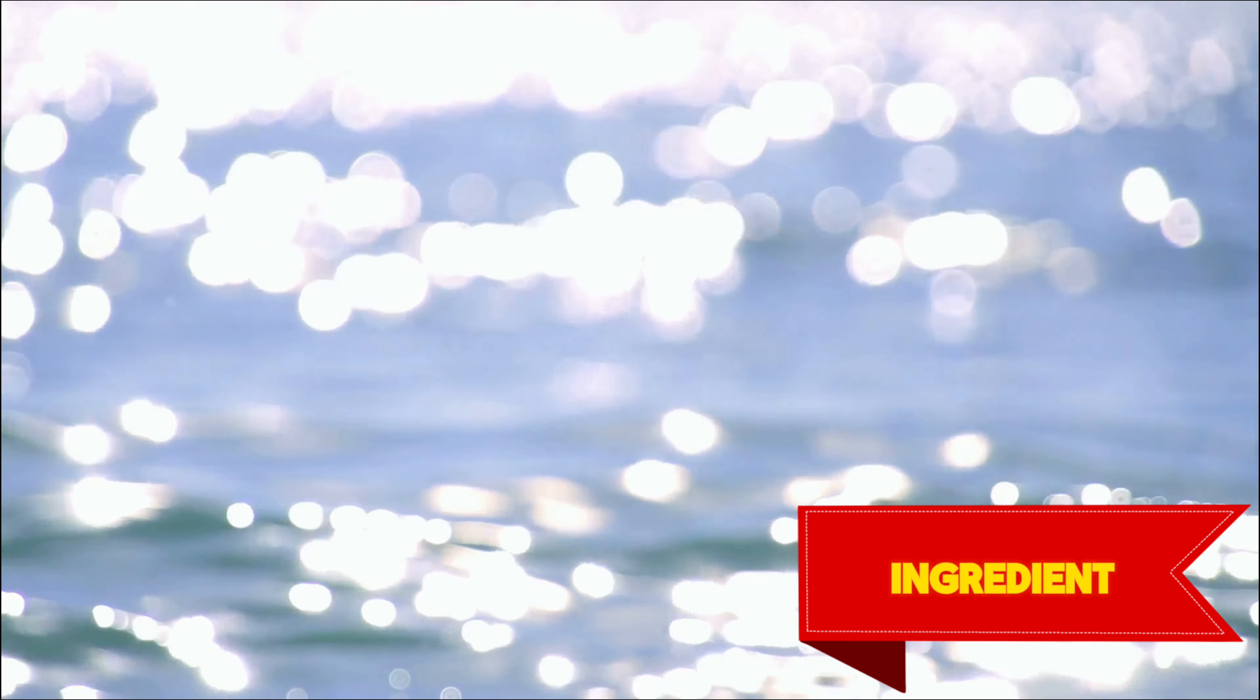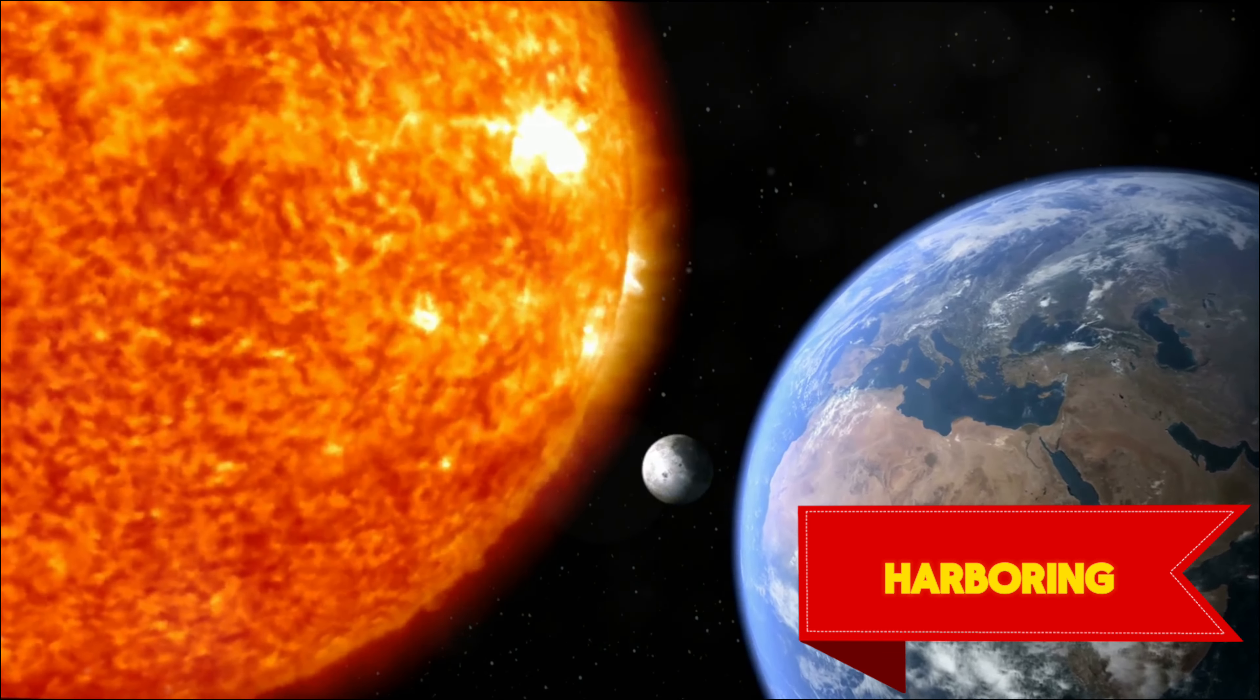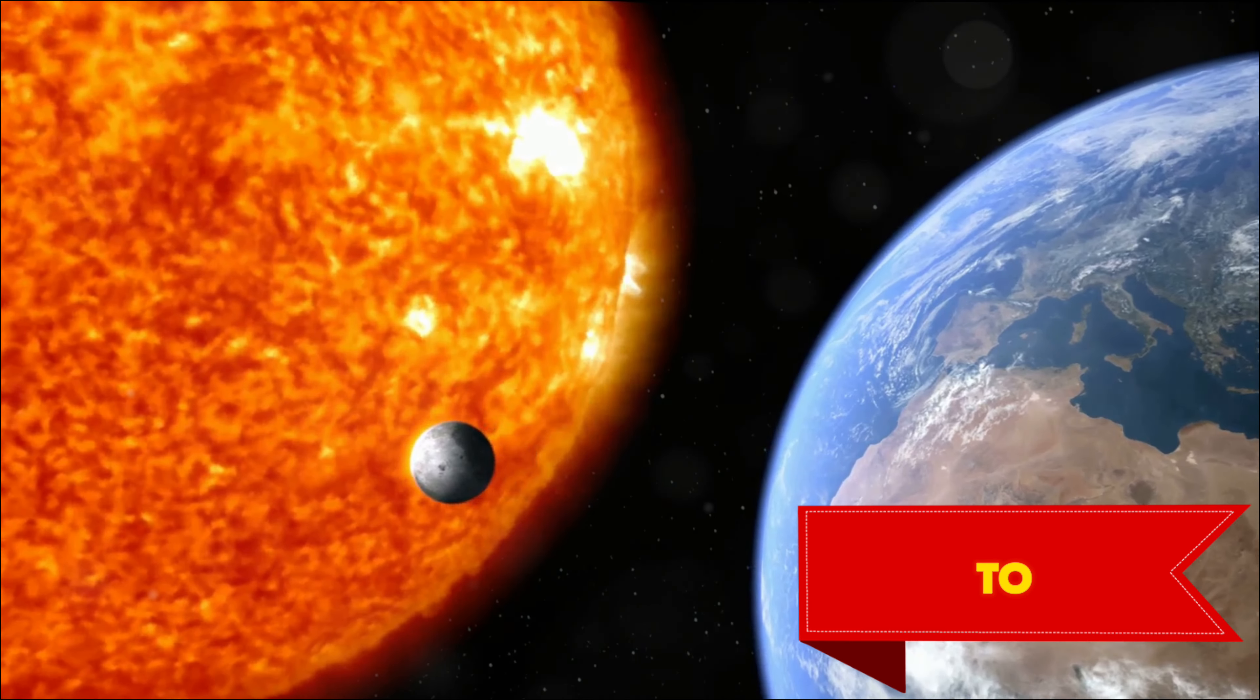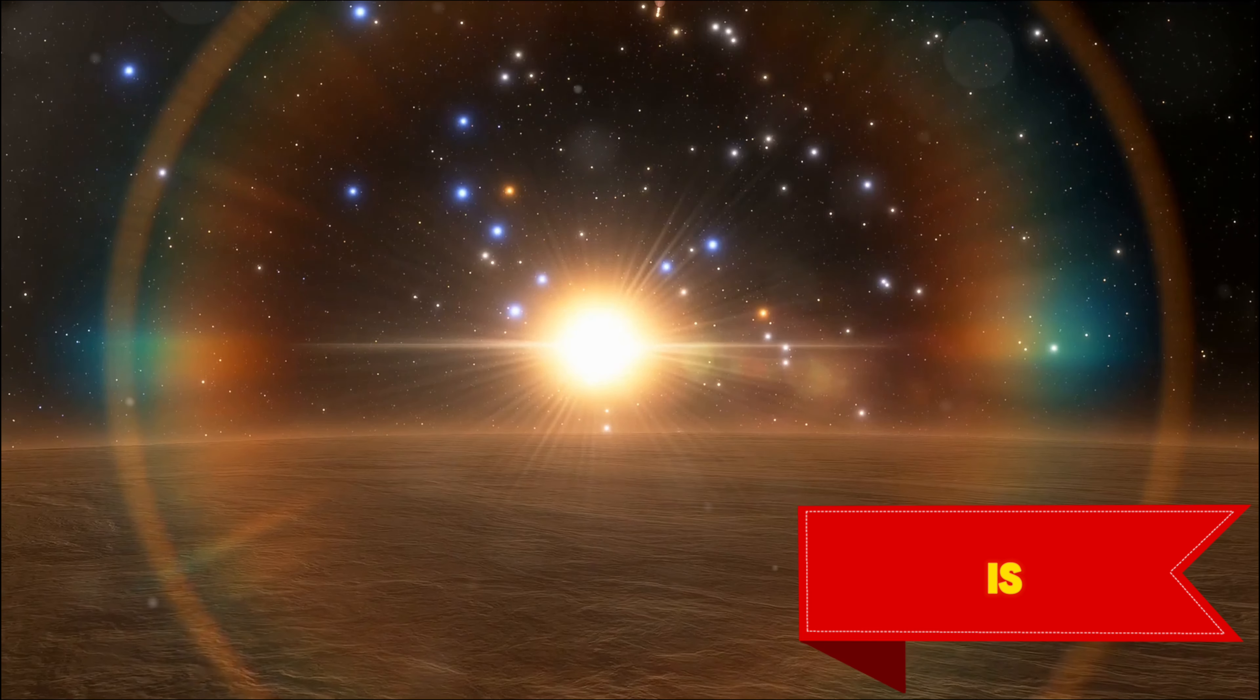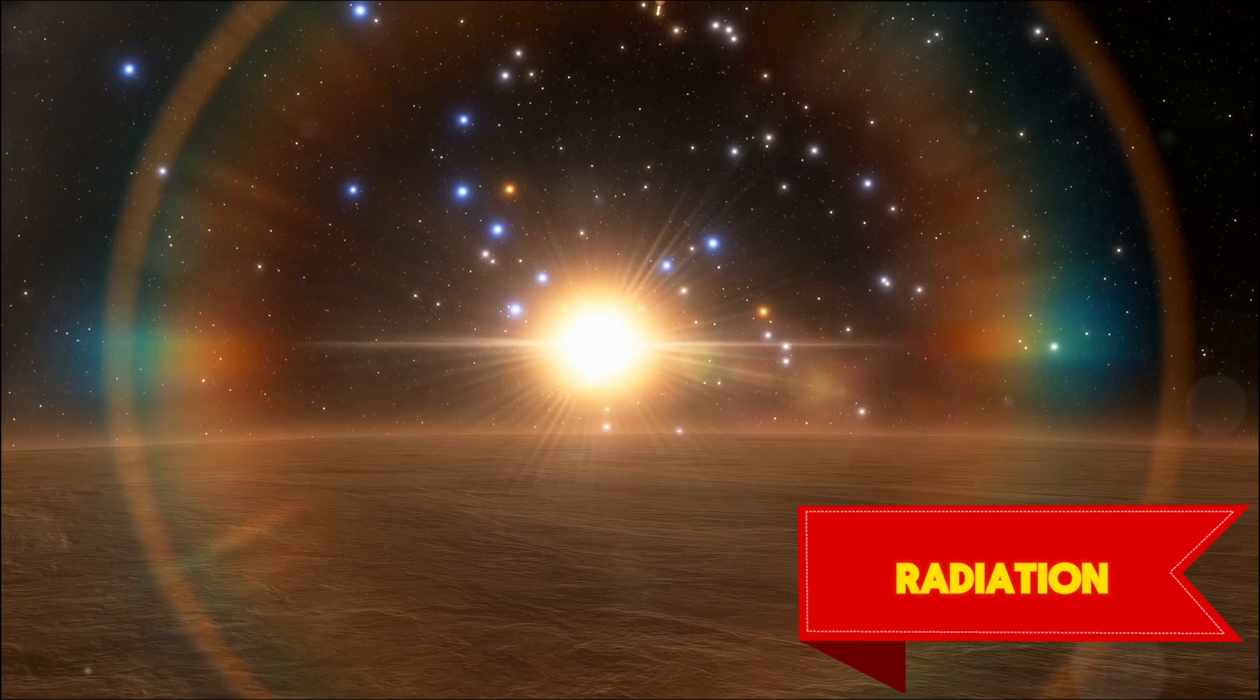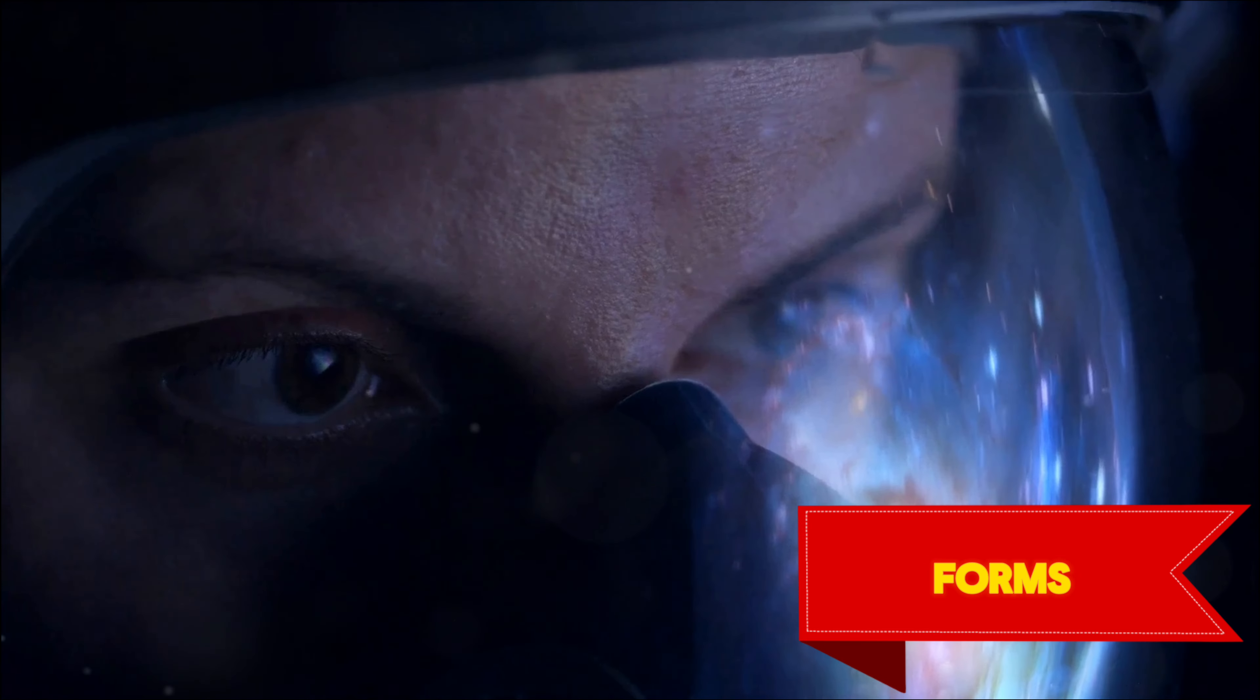In terms of size, Proxima Centauri b is just a tad larger than Earth, further bolstering its candidacy as a potential life-harboring planet. However, the road to confirming life is fraught with challenges. Proxima Centauri b is subject to intense flares of radiation from its parent star, potentially threatening any budding life forms.